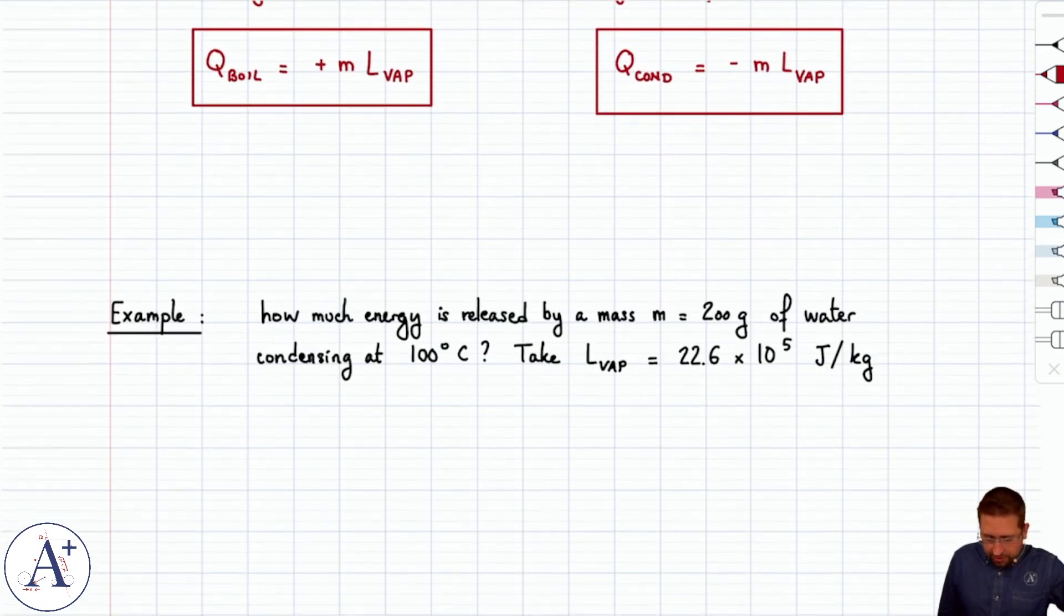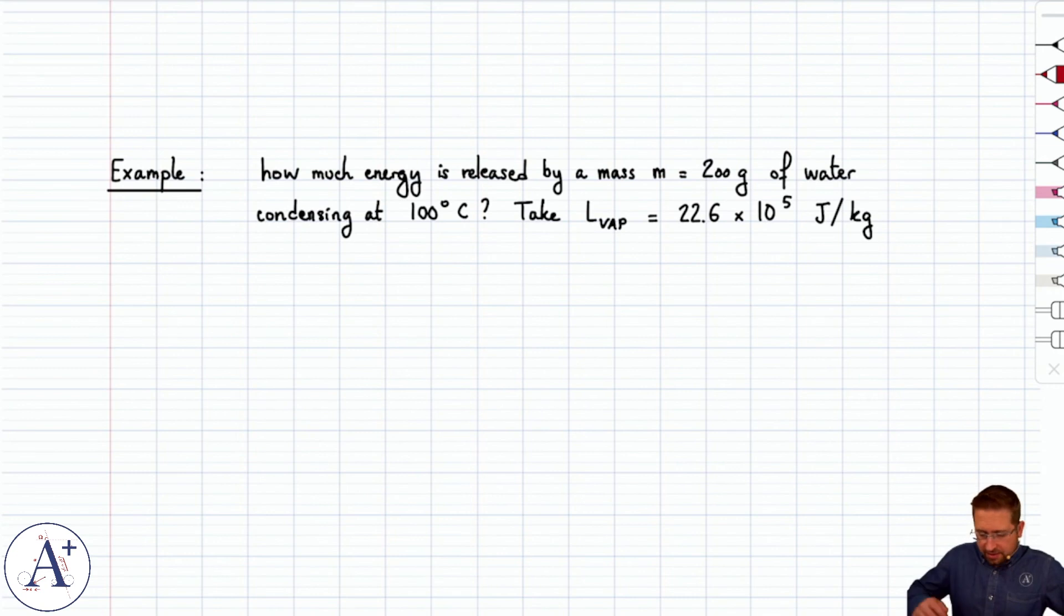So let's apply this. Let's say that we have 200 grams of water and it's condensing at 100 degrees Celsius. So in other words, it's steam, but it's condensing. How much energy is going to be released? In other words, how much energy would you have to pull out of water as it condenses?